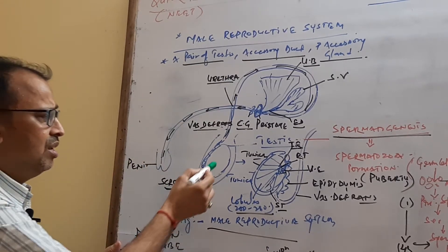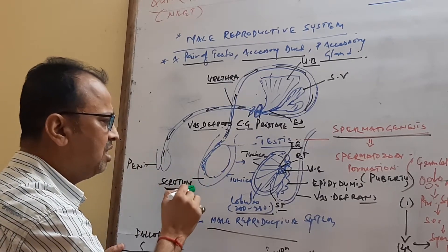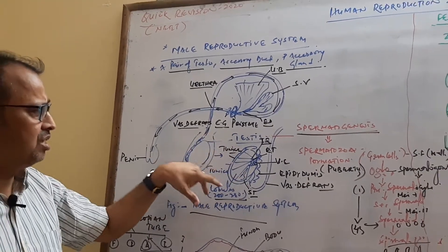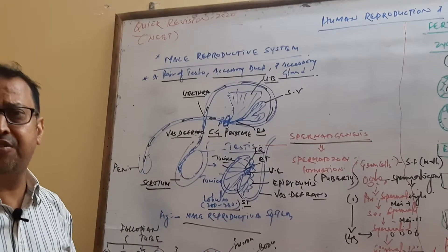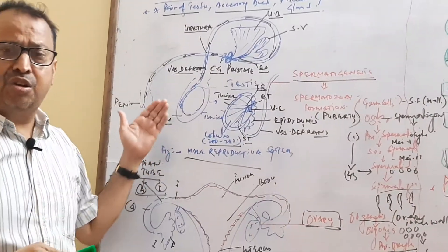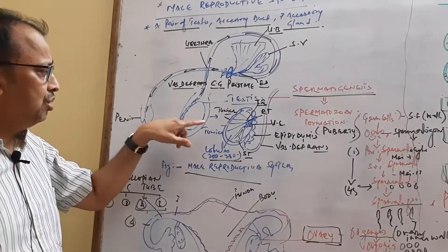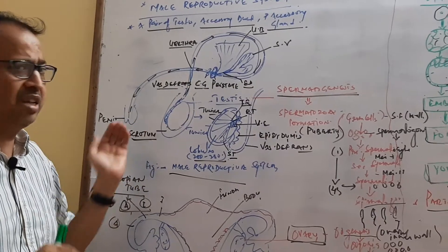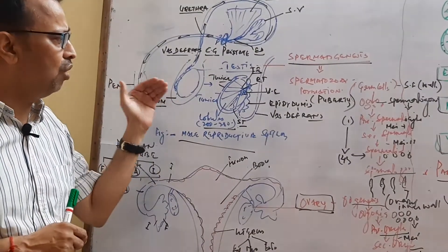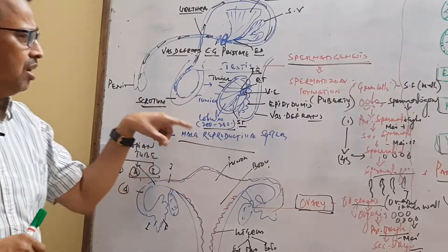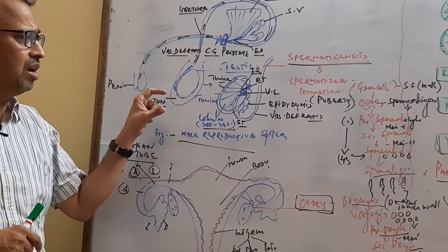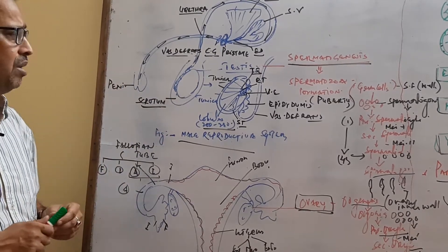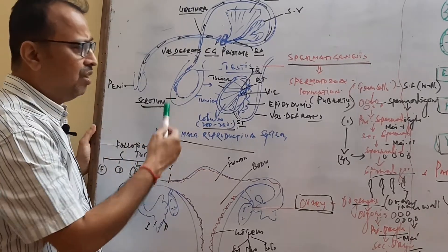This is the external structure of the testes. Now we come to the internal structure of testes. In testes, it is covered by a tunica layer. The tunica layer itself differentiates into three layers: tunica albuginea, tunica vasculosa, and the inside, the elongation starts with the elongation of the tunica albuginea to form testicular lobules. There are 200 to 250 testicular lobules, and each lobule contains 1 to 3 seminiferous tubules.